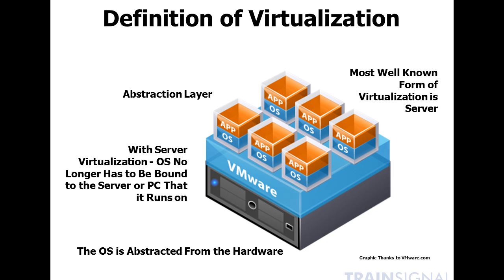This is what virtualization is in general, and there are multiple types of virtualization: desktop, application, network, storage, and even others. With desktop and server virtualization, they work very much the same way. Those containers — those virtual machines with the operating system and application inside — instead of being physical servers that you consolidated like Exchange servers, SQL servers, and web servers, those containers could be end user desktops. So you could have Bob's PC and Sally's PC and Joe's PC, each of those running inside those containers as virtual machines.